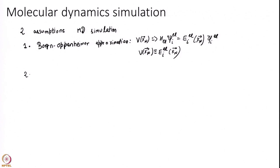The second approximation that we make is classical treatment, classical means nothing but Newtonian treatment of nuclear motion. What it means is we are going to use Xn double dot equal to minus gradient of V of Xn, where V is the same as this V.